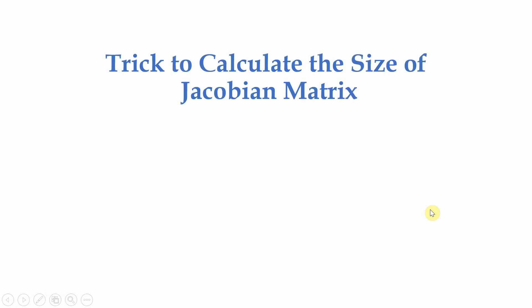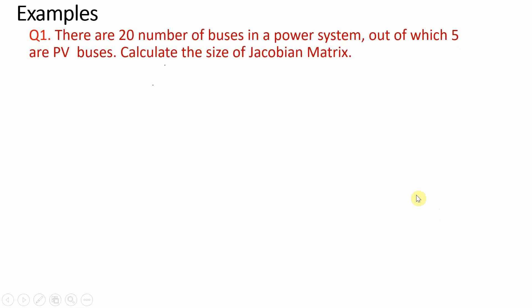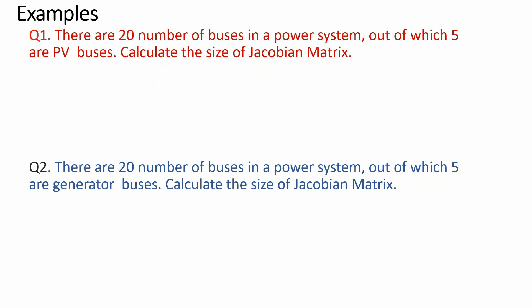In this video we will see how to calculate the size of the Jacobian matrix in a power system. To learn that concept I have taken two examples. My first example has 20 number of buses in a power system out of which 5 are PV buses, and my second question has 20 number of buses out of which 5 are generator buses. In both cases we need to calculate the size of the Jacobian matrix.